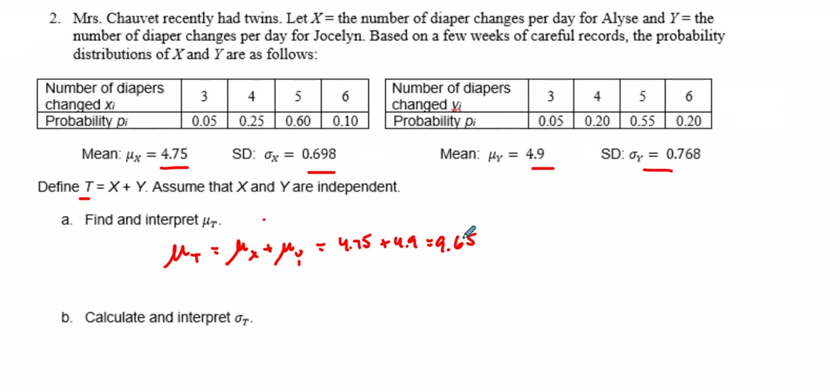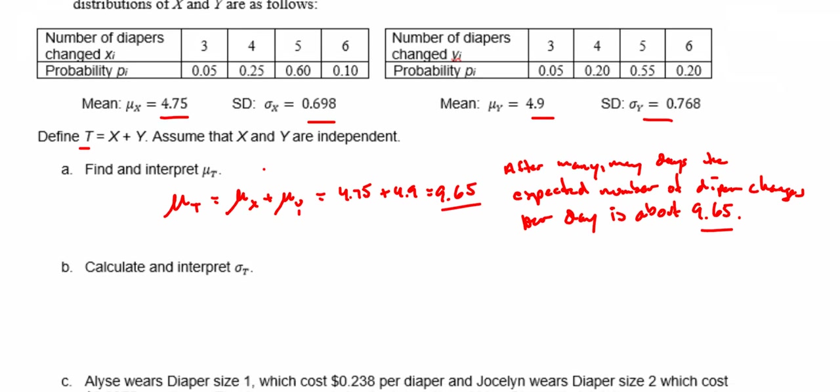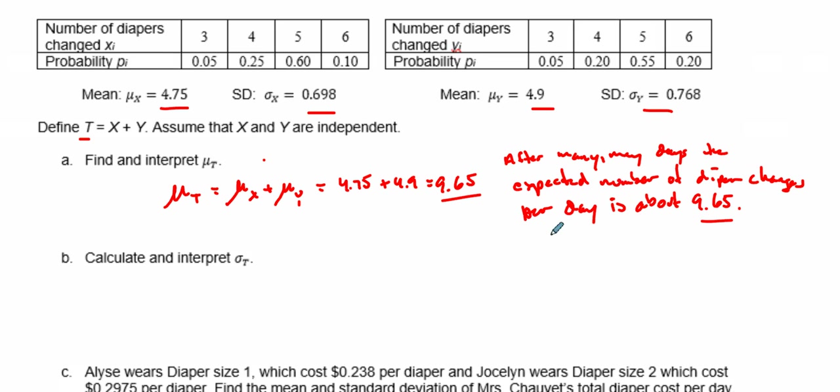After many, many days, the expected number of diaper changes per day is about 9.65. That's what we have there. So after many days, the expected number of diaper changes per day is about 9.65.